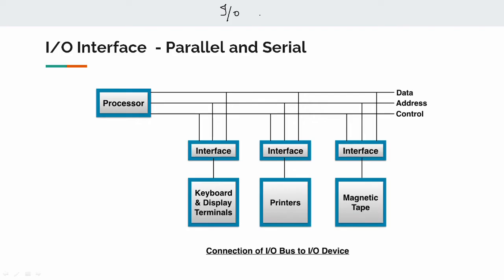If you have an input-output device, you can use a keyboard, monitors, printers, CD drive, hard drive, USB, etc. So if you have an input-output device, you connect your CPU to the IO device using an interface.